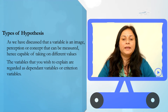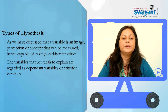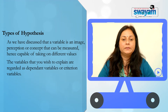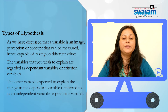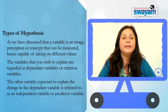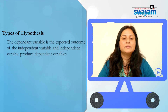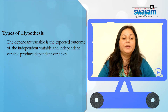The variables that you wish to explain are regarded as dependent variables or criterion variables. The other variables expected to explain the change in the dependent variables are referred to as independent variables or predictor variables. The dependent variable is the expected outcome of the independent variable, and the independent variable produces the dependent variable.